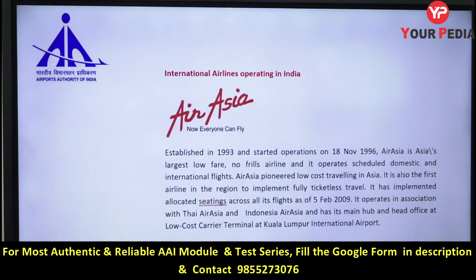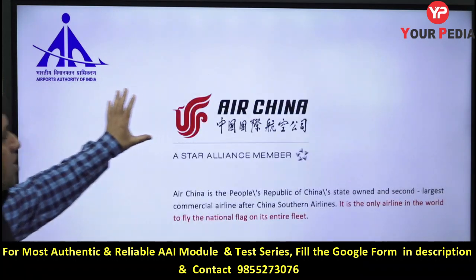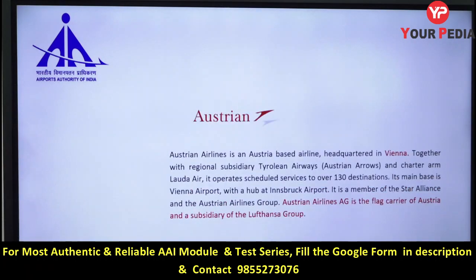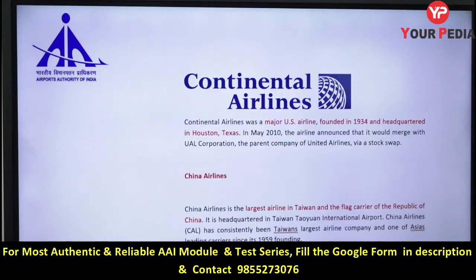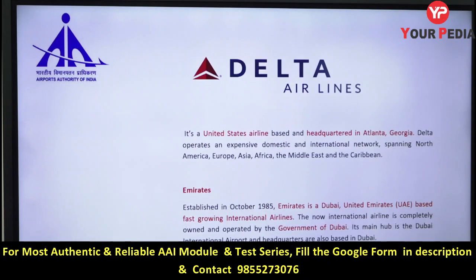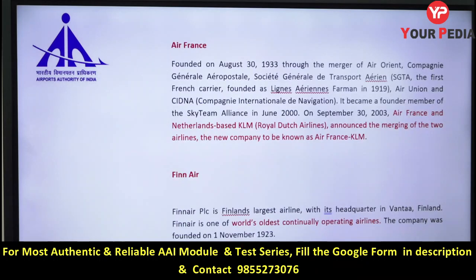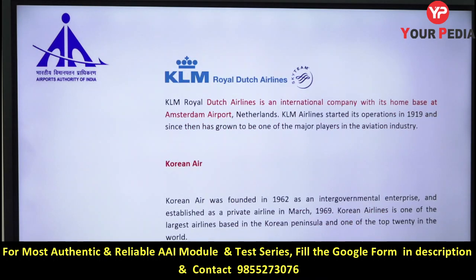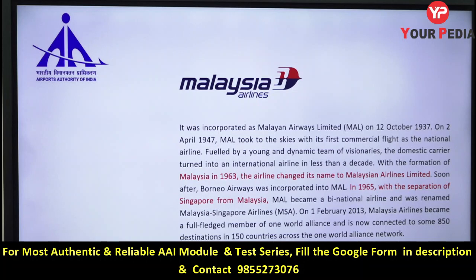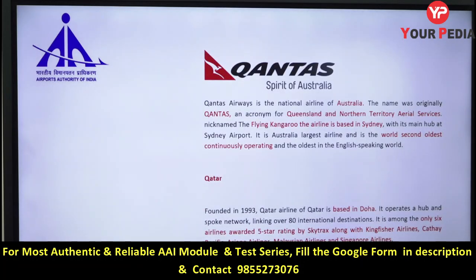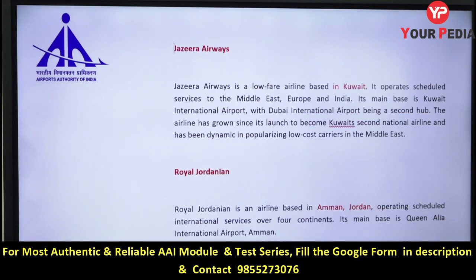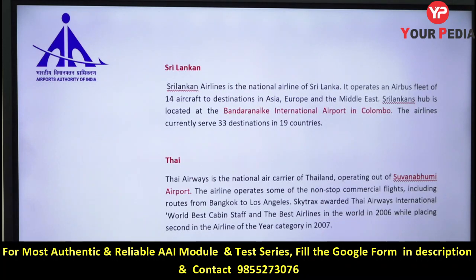Moving to international airlines: Air Asia, Air Astana, Air China, Air Canada, Austrian, British Airways, Biman, Cathay Pacific, Continental Airlines, Emirates, Delta, Etihad, Air France, Finnair, KLM Royal Dutch Airlines, Korean, Malaysian, Oman Air, Qantas — which is Australian, where Q stands for Queensland — Qatar, Jazeera (Kuwait-based), Royal Jordanian, Sri Lankan, and Thai Airways.